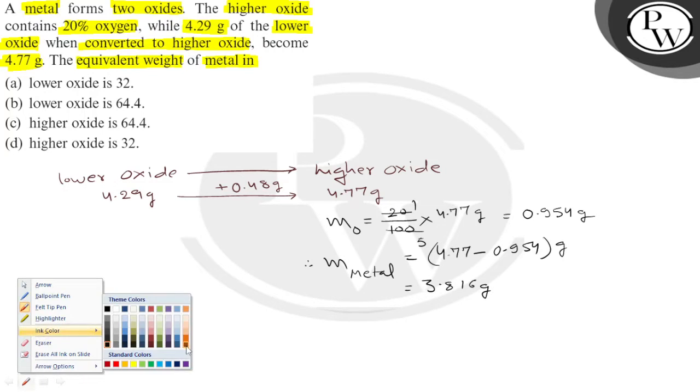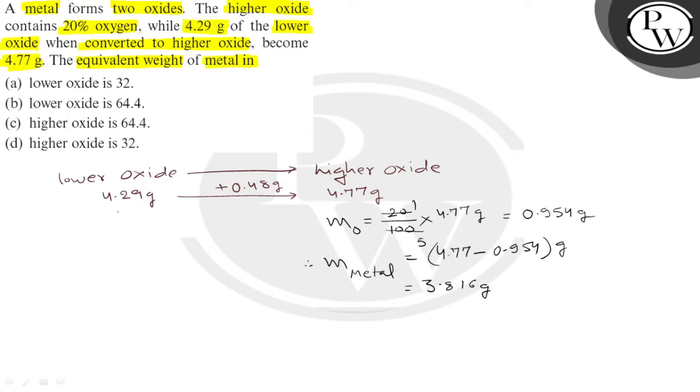Now, what will be the mass of oxygen here? Because mass of metal, we have considered the same in both oxides, 3.816 gram. So, what should be mass of oxygen in lower oxide? Subtract to get 0.474 gram.